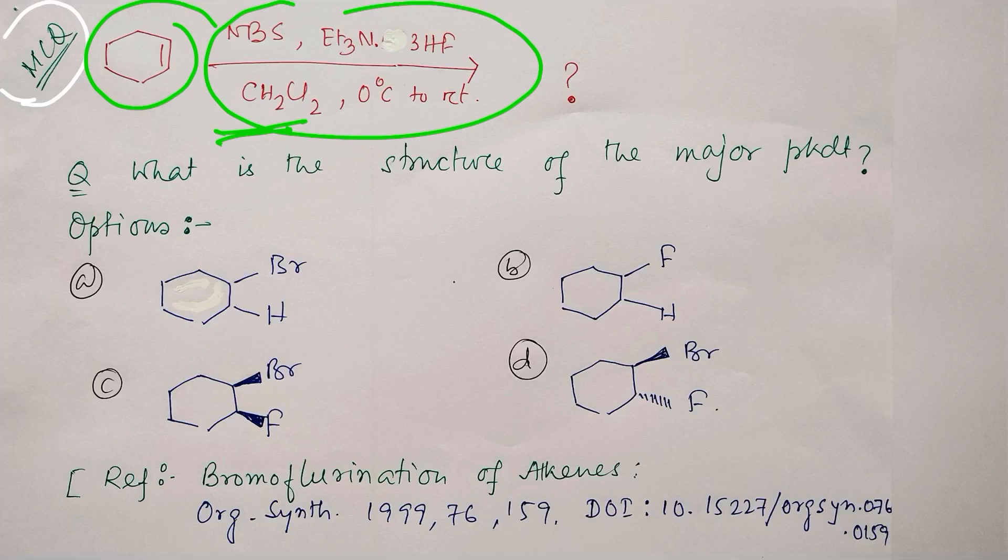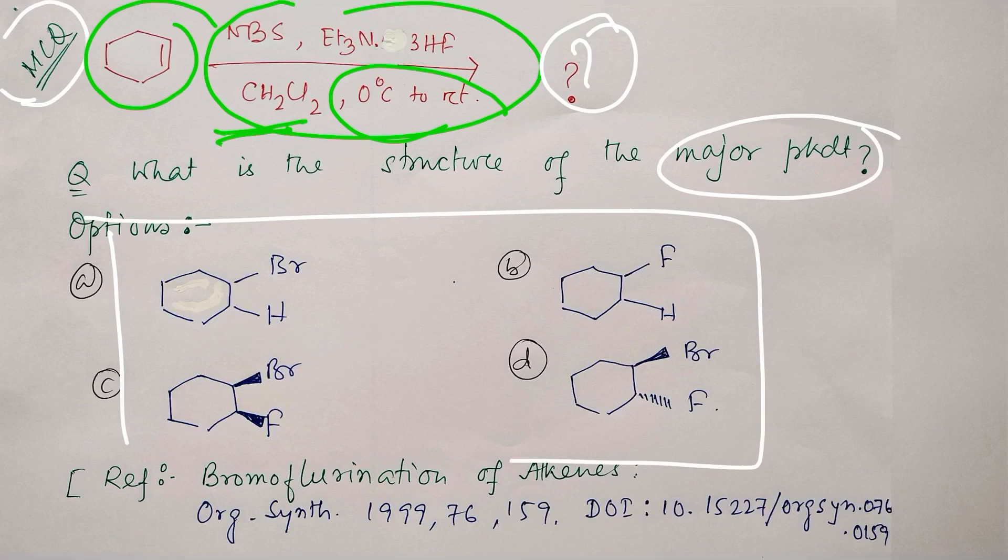The reaction occurs at zero degree to room temperature conditions. In this reaction one major product is produced, and the question is: what is the major product?